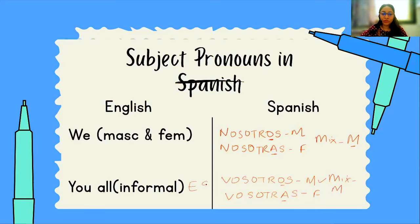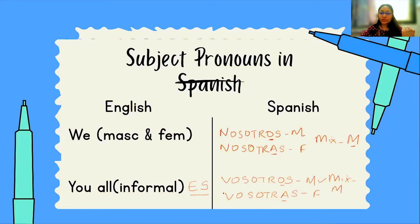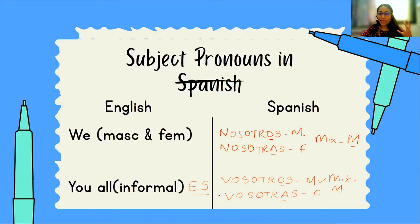These pronouns — 'vosotros' and 'vosotras' — are very exclusively used in Spain, which is in Europe. Spanish is spoken in many countries outside of Europe, especially in Latin America. So your question might be: if I'm in Latin America talking to a Latin American person and I can't use 'vosotros' or 'vosotras,' what do I use?